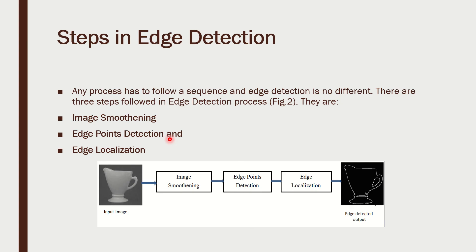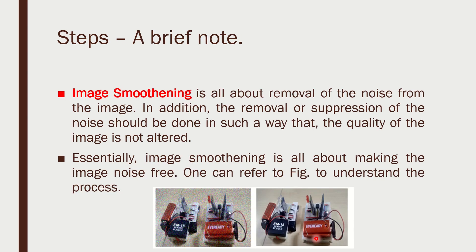What are the steps in edge detection? There are three steps: image smoothening, edge point detection, and edge localization. Starting with the input image, I do image smoothening first, then edge point detection, then edge localization, and finally get the edge detected output. The input image may have a lot of noise, so we need to remove or suppress the noise without affecting the image quality — this is called image smoothening. The content is completely preserved but noise is removed.